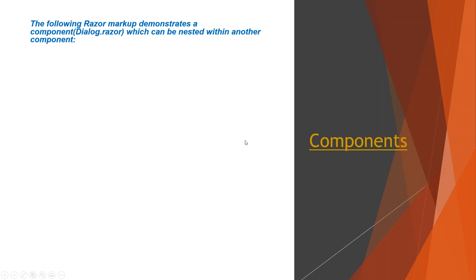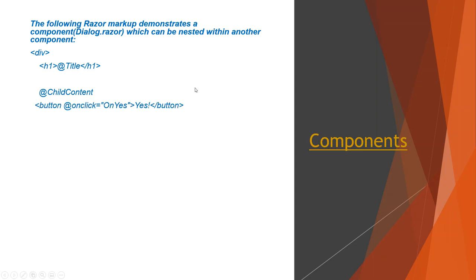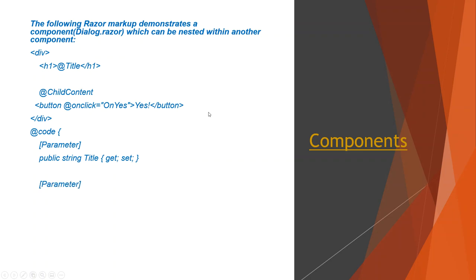Welcome again. Today I'm going to keep my promise. In the first lecture on introduction to Blazor, I showed this Razor markup for a dialog component and told you it can be nested within another component — the index component. This is the markup for the dialog component, which is a Razor file with a div tag containing an h1 that holds the title using @title, a Razor markup signifying server-side code, and @ChildContent.